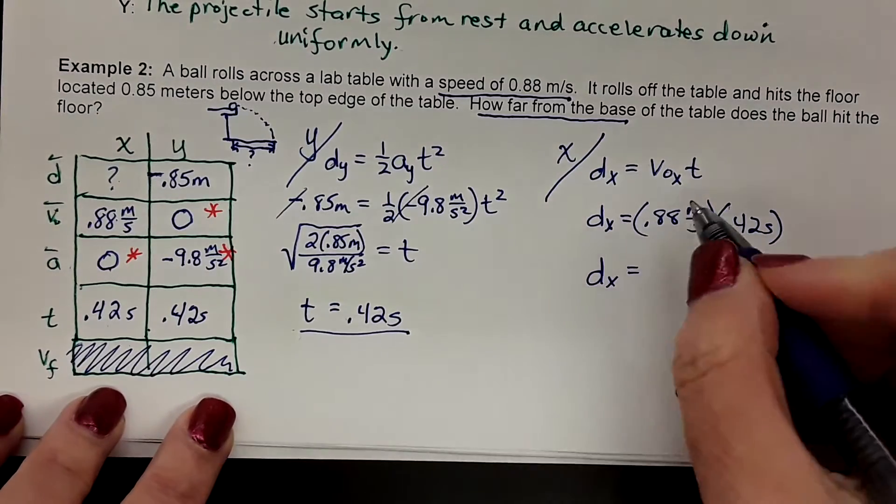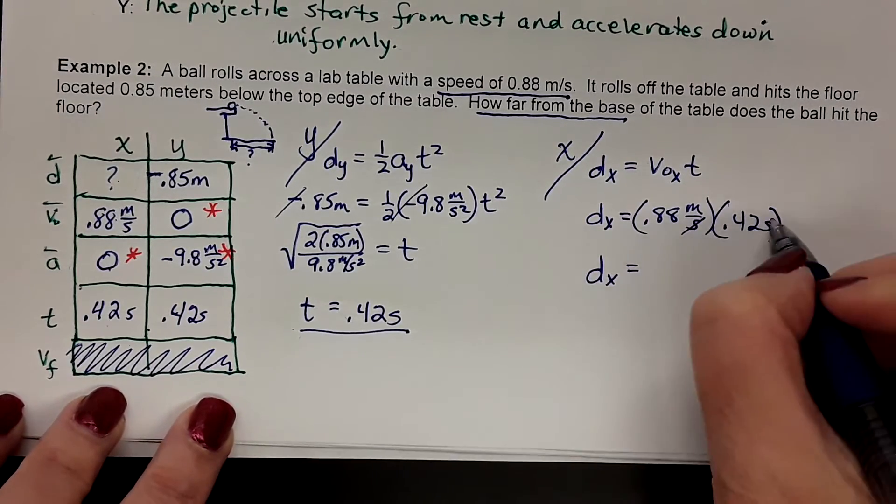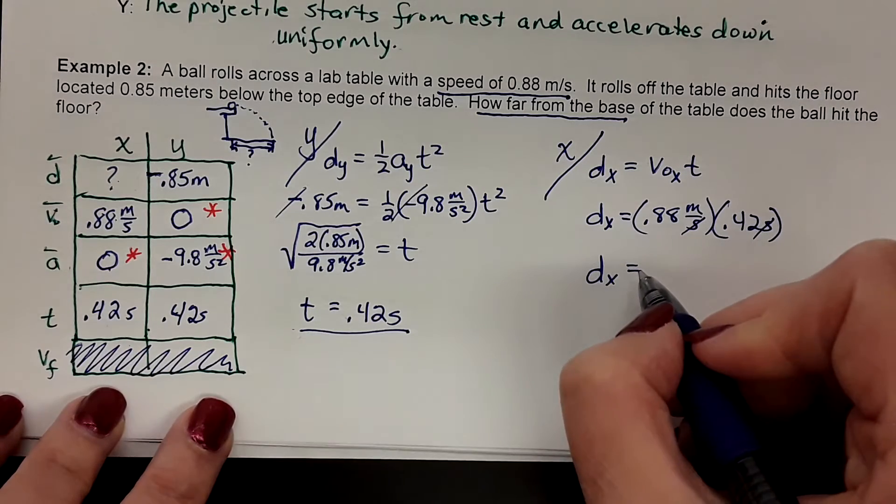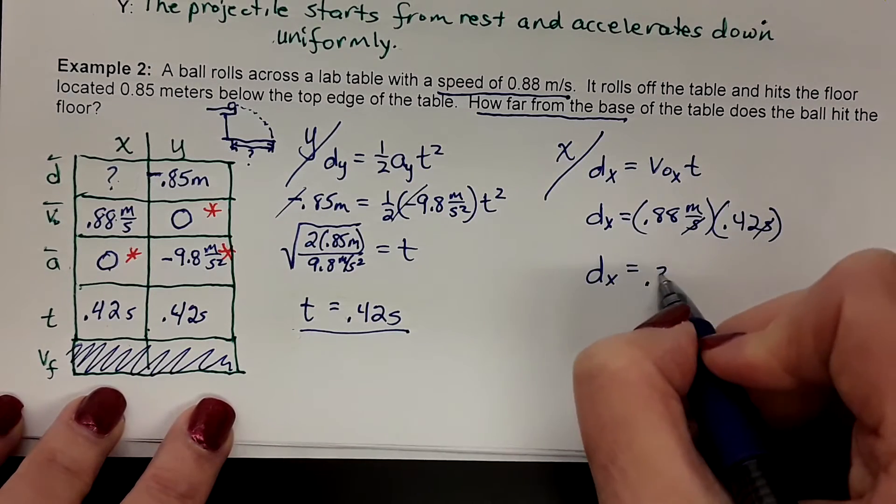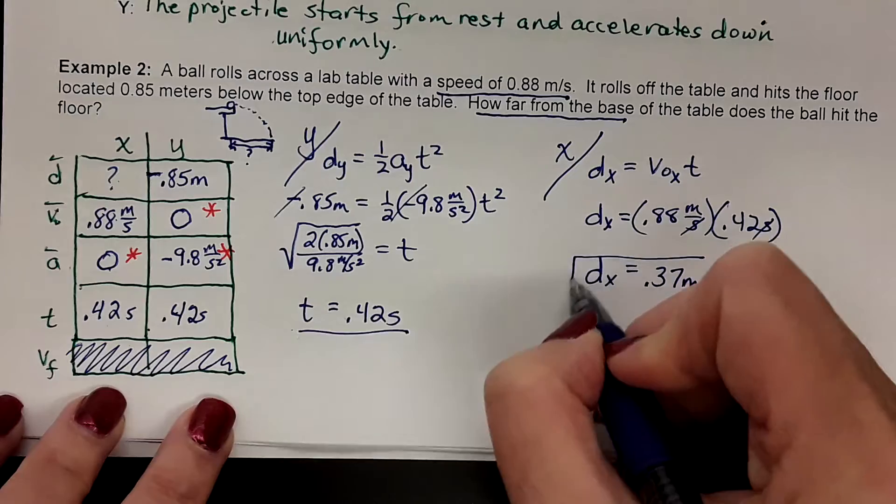And if you stick that in your calculator, the seconds cancel, you're going to get left with meters. You should get 0.37 meters. Check it out for yourself.